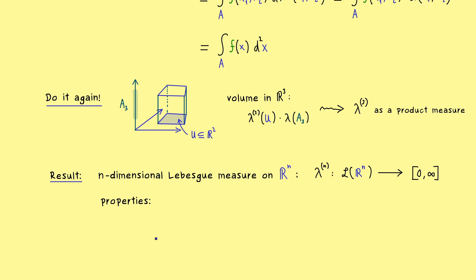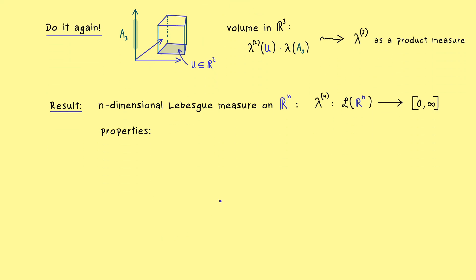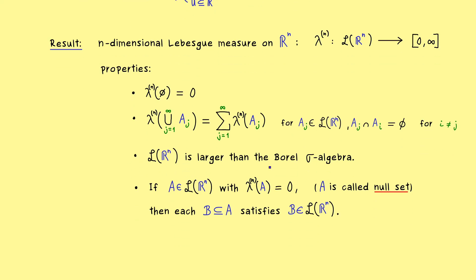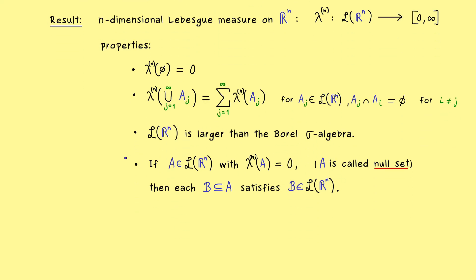So this is not surprising at all. And also we have exactly the same properties as before. This means we have a well-defined measure. The Sigma algebra is larger than the Borel Sigma algebra. And our whole measure is complete in this sense.